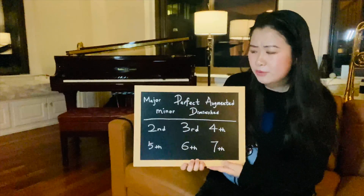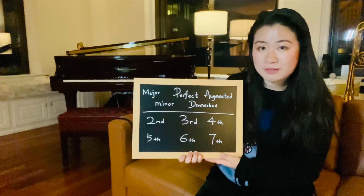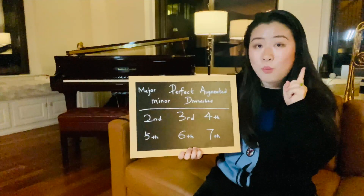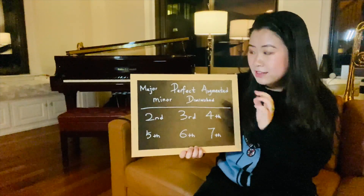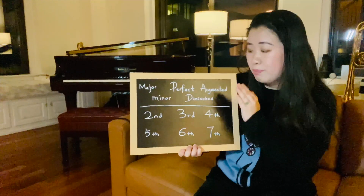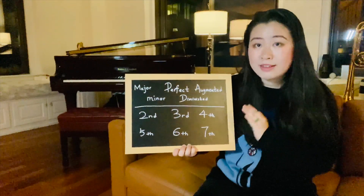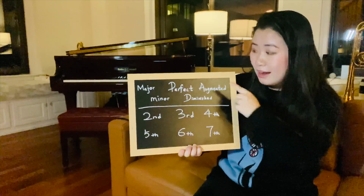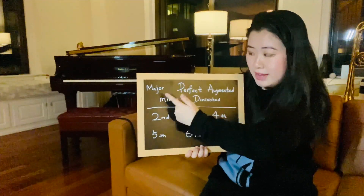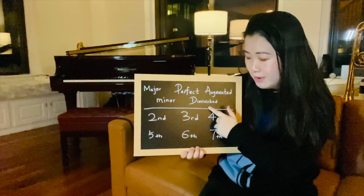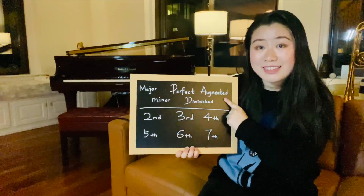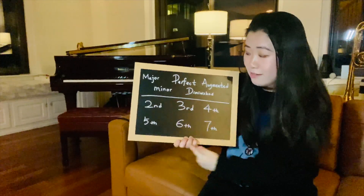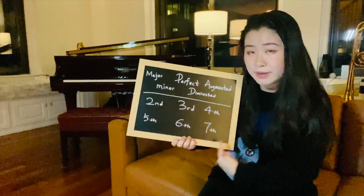Let's quickly review the fundamentals of how intervals work. It takes two words to describe one interval — like 'major third' or 'perfect fourth.' The first of those two words is the quality, so you pick one out of these five words: major, minor, perfect, diminished, or augmented. The second of those words is the size, so you pick one out of these numbers.